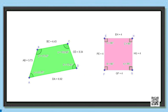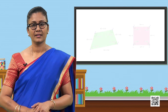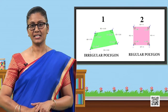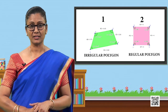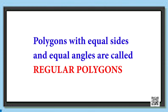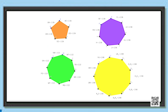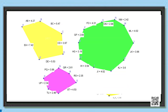Now look at these polygons on the screen. Both of them are four-sided polygons, so they are quadrilaterals. But there is a difference between them — the second polygon has got equal sides and equal angles, but the first one does not. Hence, polygons with equal sides and equal angles are called regular polygons. Here are some more examples of regular and irregular figures.